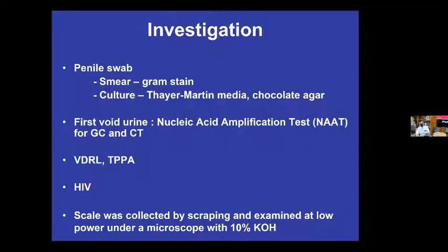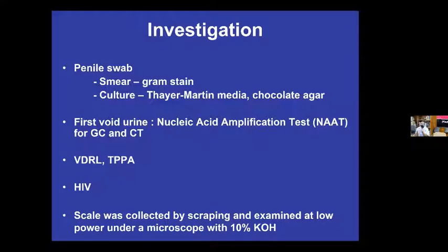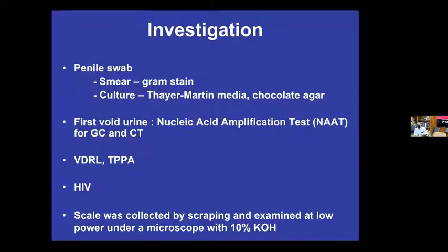How do you investigate this patient? Collect some of the discharge, put it on a slide and do a gram stain. You can also culture it on thayer-martin media. At MRF we have the nucleic acid amplification test available — the patient passes a little urine in a special container and we send it to MRF to test for gonorrhea and chlamydia. Because he has an STI, screen him for syphilis using VDRL as screening and TPPA as confirmatory test, and confirm his HIV status. We also collected scale from the fingers and examined it under 10% potassium hydroxide.